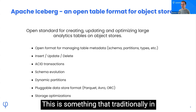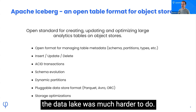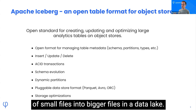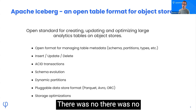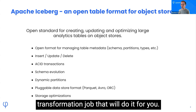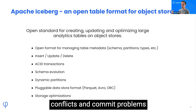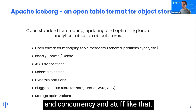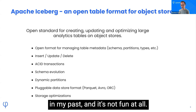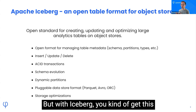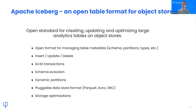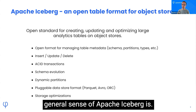You also get storage optimization, which was much harder to do traditionally in the data lake. If you wanted to compact — merging small files into bigger files — there was no predefined mechanism. You had to write a Spark job or transformation job, and then deal with conflicts, commit problems, and concurrency issues. With Iceberg, you get this implementation out of the box, which makes it easier with less work for you. That's a general overview of what Apache Iceberg is.